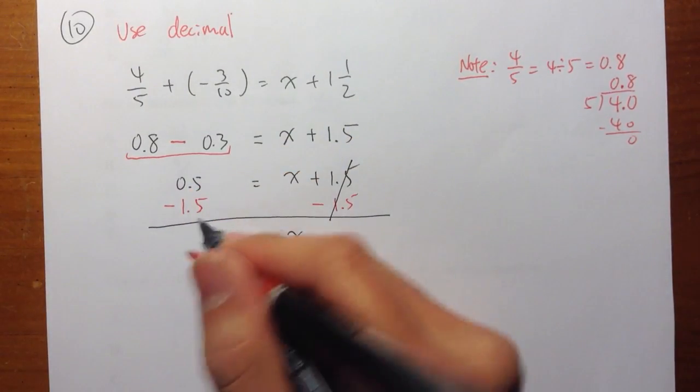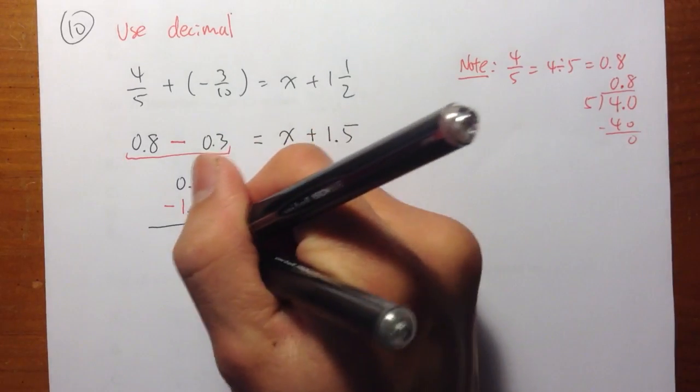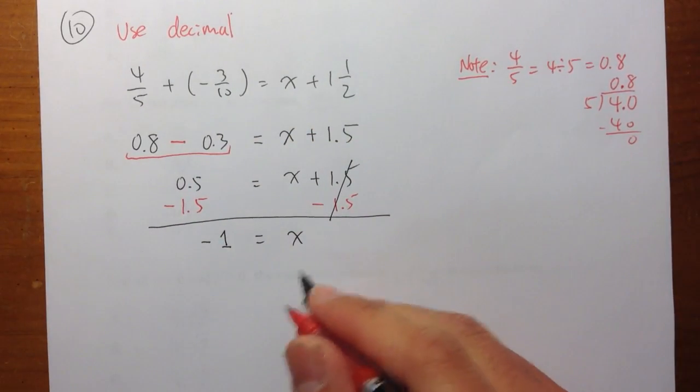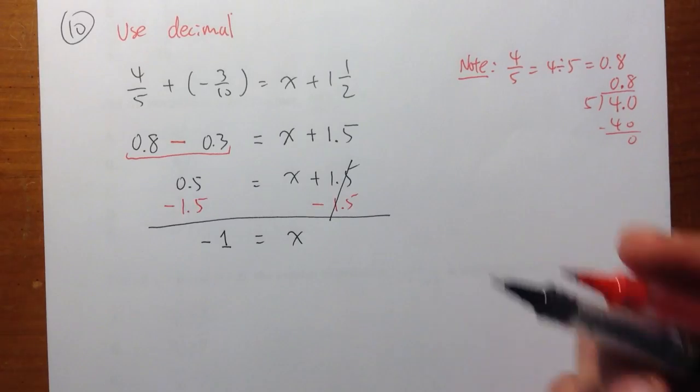So I have x on the right-hand side. And 0.5 minus 1.5 is equal to negative 1. So negative 1 is equal to x. Or in another word, x is equal to negative 1.